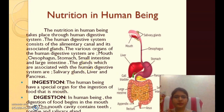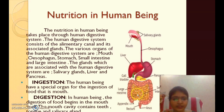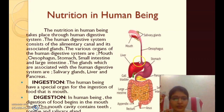Now the process of nutrition in human beings. In human beings, nutrition takes place through the human digestive system. The human digestive system consists of an alimentary canal and associated glands. The organs include the mouth, esophagus, stomach, small intestine, large intestine, and rectum. Associated glands include the salivary glands, liver, and pancreas.